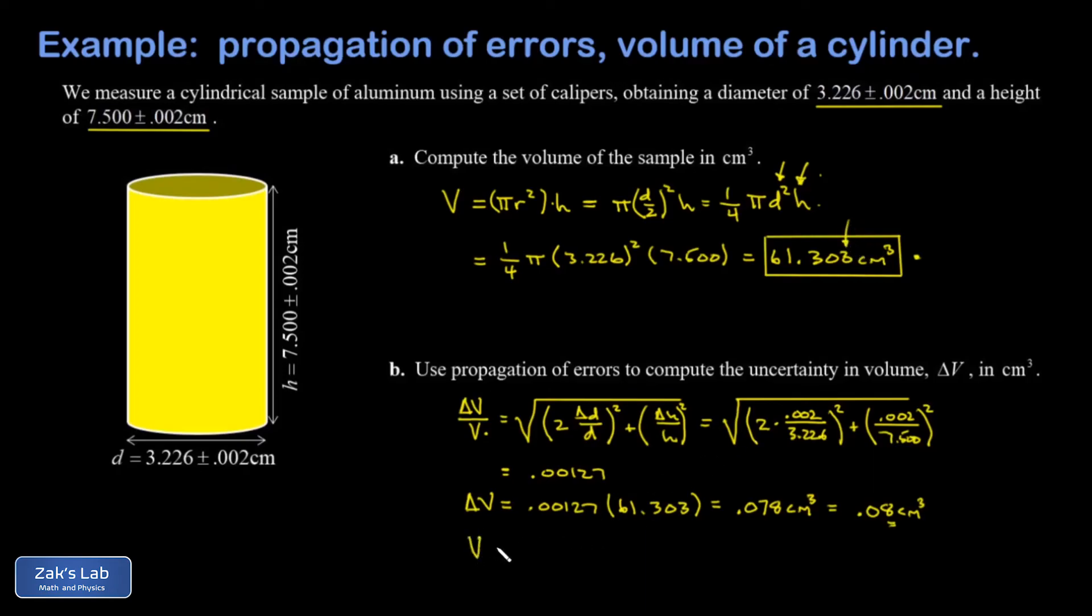So we state our final volume like this: V is equal to 61.30 plus or minus 0.08 cubic centimeters.